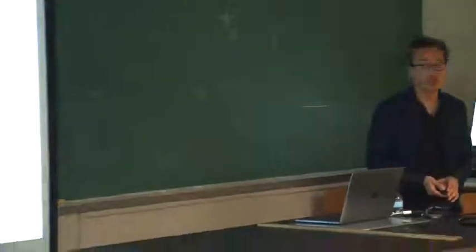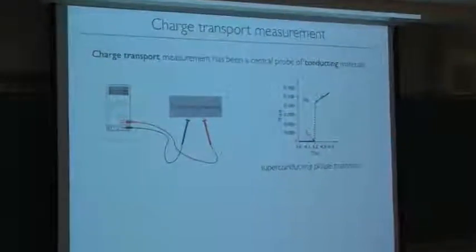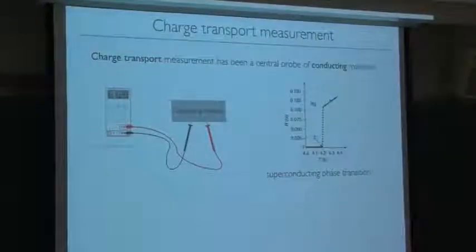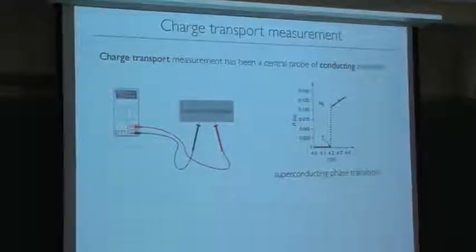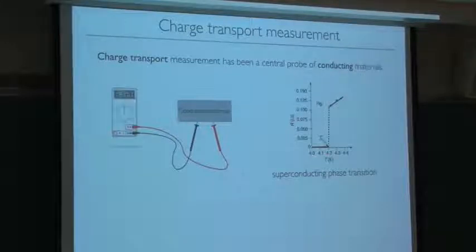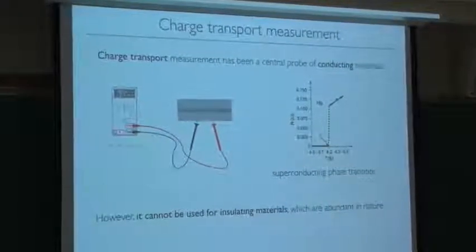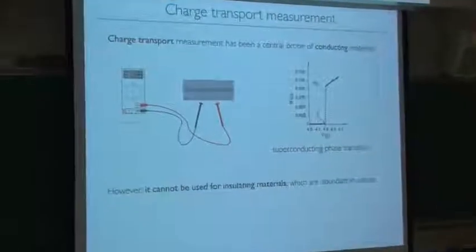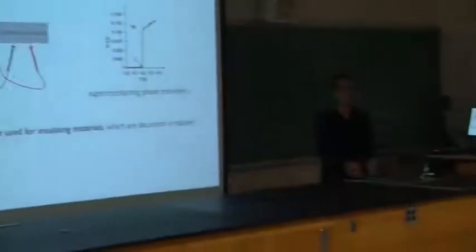Throughout the history of physics, charge transport measurement has been a central probe of conducting materials. For example, electrical resistance provides defining characteristics of many interesting condensed matter phenomena. The best example would be superconductivity, in which electrical resistance suddenly goes to zero at sufficiently low temperatures. However, unfortunately, charge transport measurement cannot be used for insulating materials, which are abundant in nature. In particular, many of the interesting quantum materials are insulators with which we cannot perform charge transport measurement.